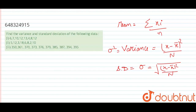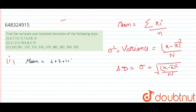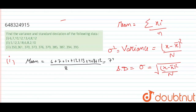For the first part, I have to calculate the mean. Mean equals 6 plus 7 plus 10 plus 12 plus 13 plus 4 plus 8 plus 12, divided by 8, which equals 72 by 8. So the mean is 9.